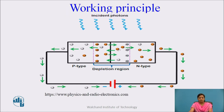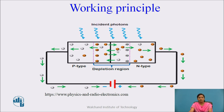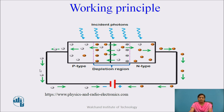When light is incident on the depletion region or PN junction, the temperature across the depletion region increases, and the valence electrons gain energy from the incident photons and separate from their parent atoms, causing electron and hole separation. As these electrons are negatively charged, they attract towards the positive terminal of the battery. As light intensity increases, more electron-hole separation takes place and a larger amount of electrons flows through the device.